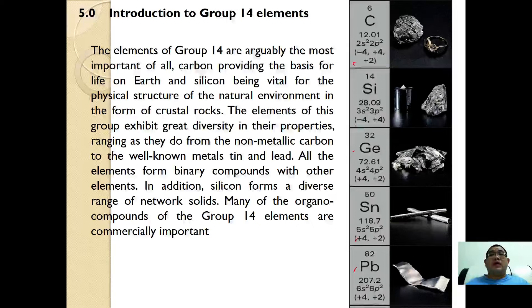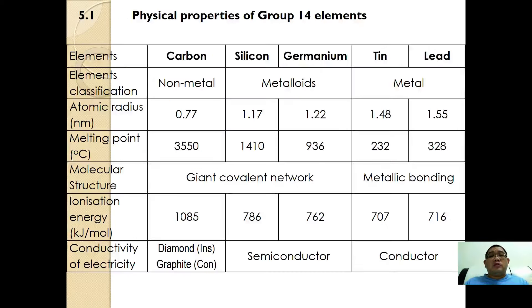Let's have a look at the physical properties together. Here in the table you are seeing the physical properties of group 14 elements. As mentioned, carbon is a non-metal, silicon and germanium are metalloids, and tin and lead are metals.